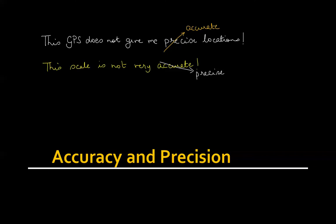This GPS does not give me precise locations and this scale is not very accurate are two pretty common sentences. What would happen if I were to switch the words around? Does it make sense if I say this GPS does not give me accurate locations or this scale is not very precise? Confused? Don't know? Well that's not unusual because a lot of us use accuracy and precision interchangeably as if they were the same. And while they do sound similar they are not the same because accuracy and precision as you are about to find out are totally different.